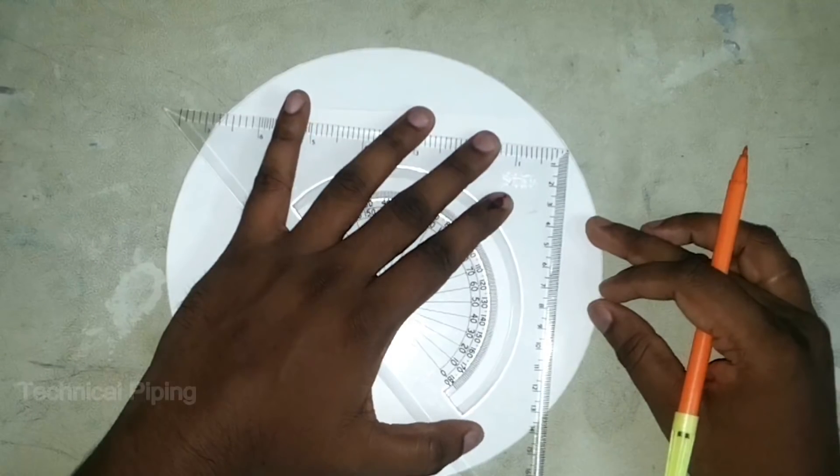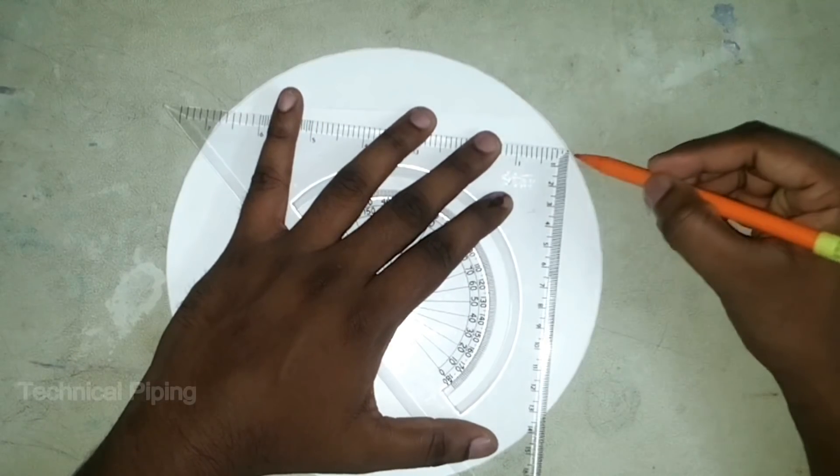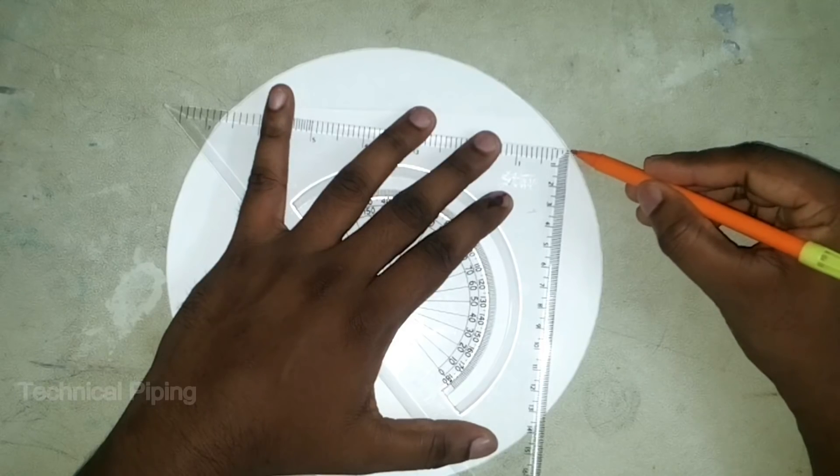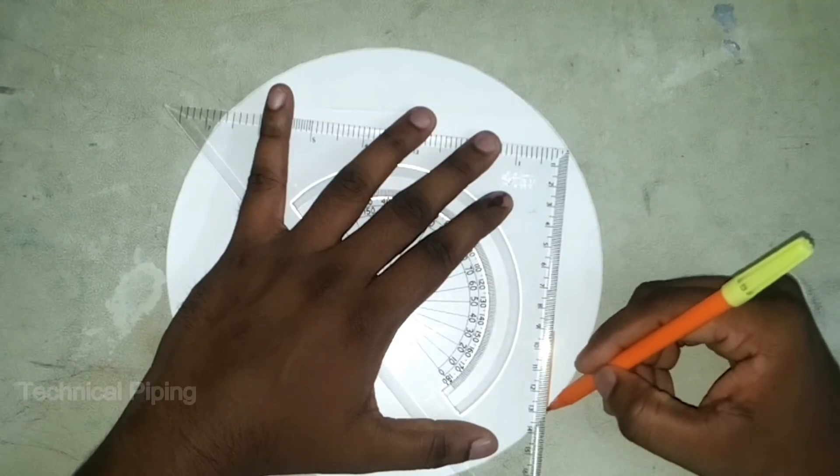Now, we'll see the steps to find the center of the circular plate. Take a square tool and set the point on any edge of the circle.